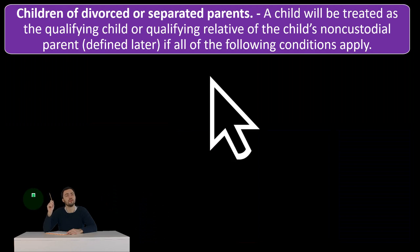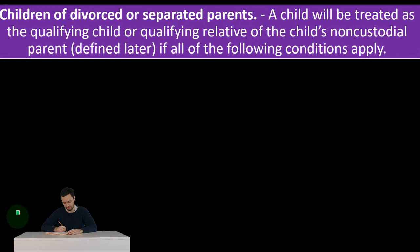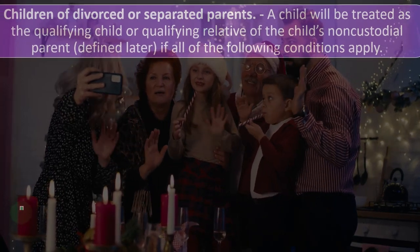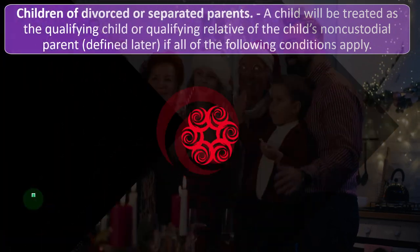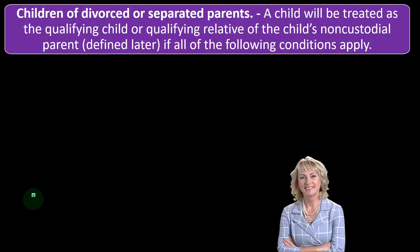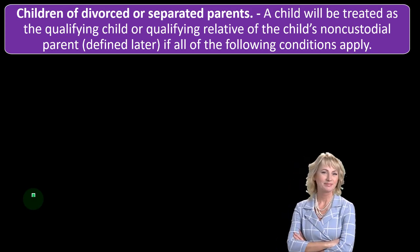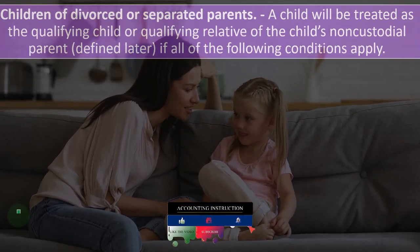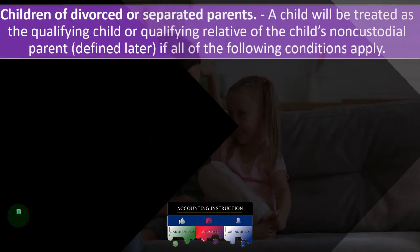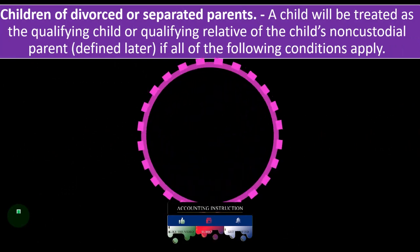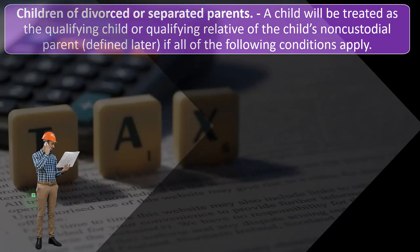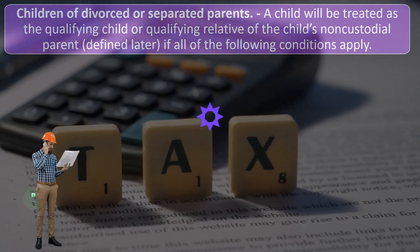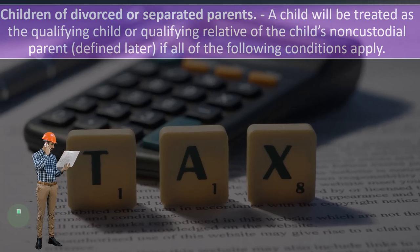Children of divorced or separated parents: a child will be treated as a qualifying child or qualifying relative of the child's non-custodial parent if all of the following conditions apply. Usually when we think about the test for a dependent, we think about whether the child lives with the taxpayer and whether over half of the support is given to them. But joint custody situations are common gray areas, and when someone's going through a divorce or separation, they want to define these rules clearly.